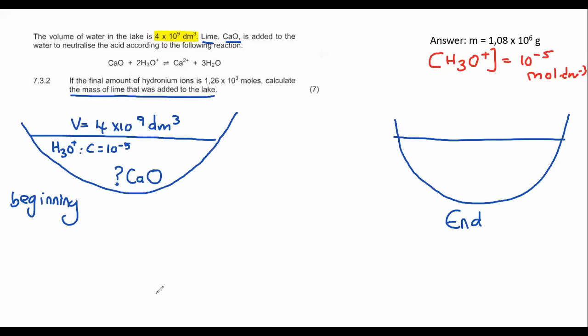So what we can quickly do is we can calculate how much hydronium moles are there in the beginning of the question. So we can put these two together using the formula C equals N over V. And we know that the concentration of hydronium is 10 to the minus 5. The number of moles we don't know, but the volume of the lake is 4 times 10 to the power of 9. And so if you work out the moles of hydronium, you would get 40,000 moles. That is how many moles of hydronium we have.